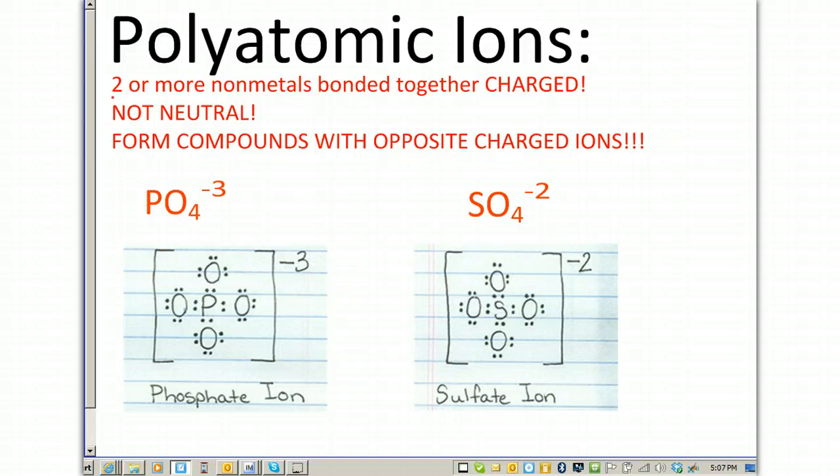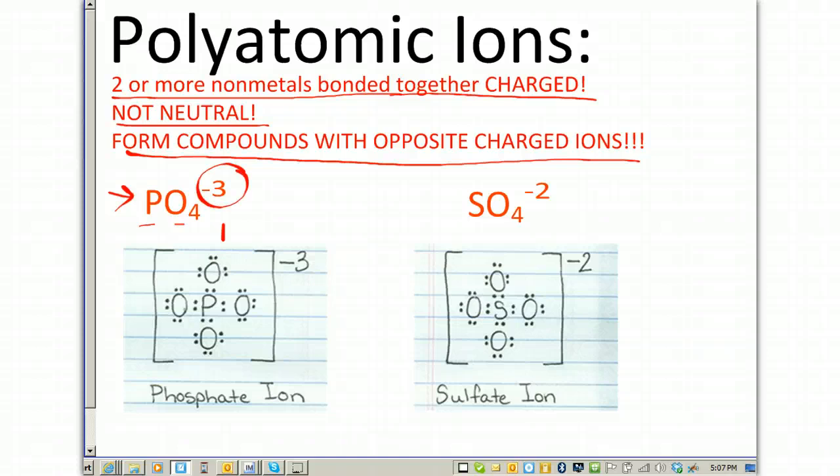Polyatomic ions are going to be two or more non-metals bonded together, and they have a charge. It's not neutral. So, we form, and they form compounds with oppositely charged ions. So, our first example is going to be phosphate, where you have phosphorus, which is a non-metal, oxygen, which is also a non-metal, and there's four of them, and see they have this charge. That charge is what makes this known as a polyatomic ion. More than, two or more atoms with a charge. Sulfate on the right-hand side, sulfur is a non-metal, oxygens are all non-metals, and because together they have a charge, makes this also considered a polyatomic ion. Because it's a negatively charged ion, it'll tend to try to bond with positively charged atoms or other ions.